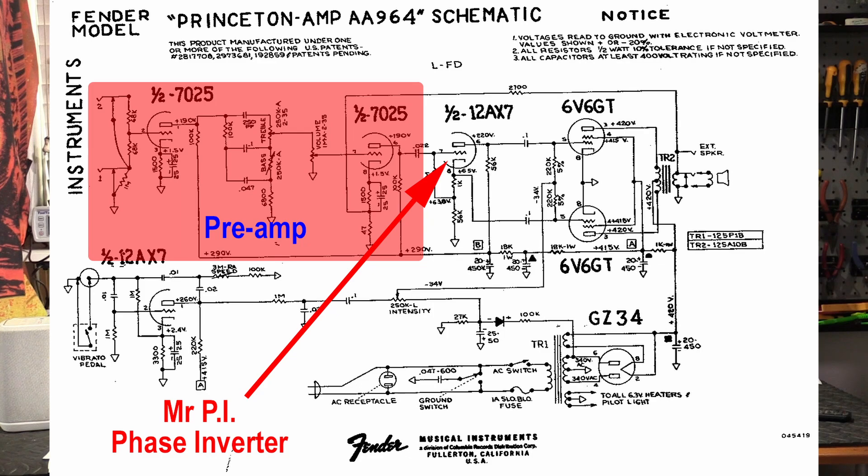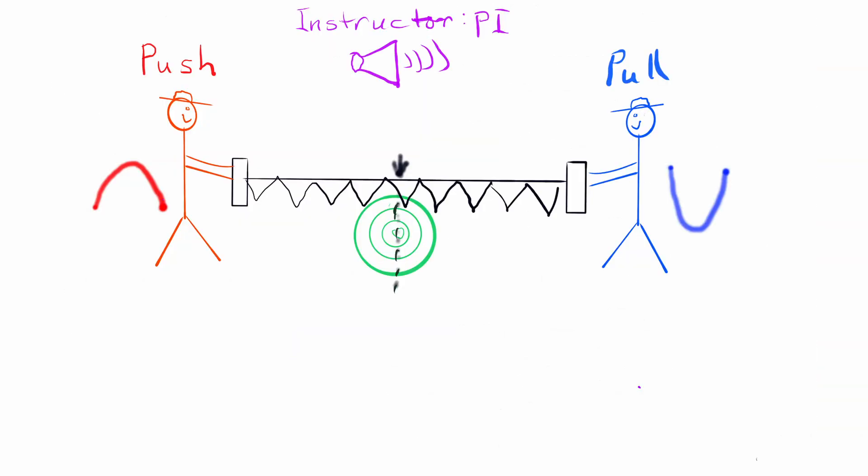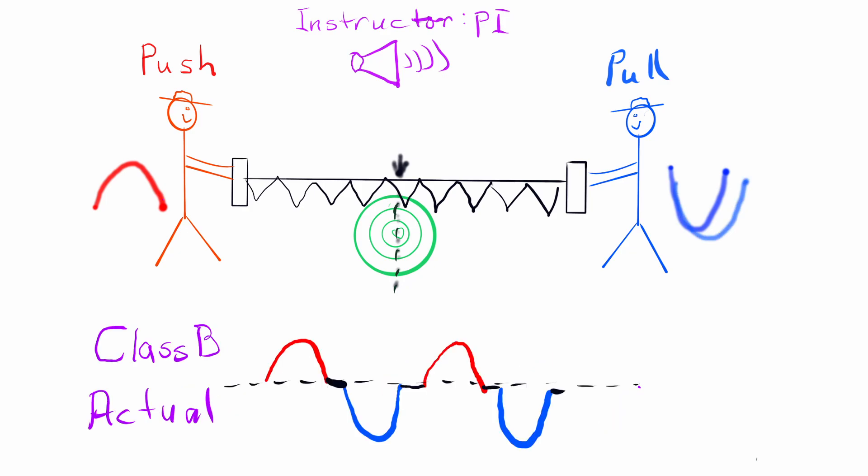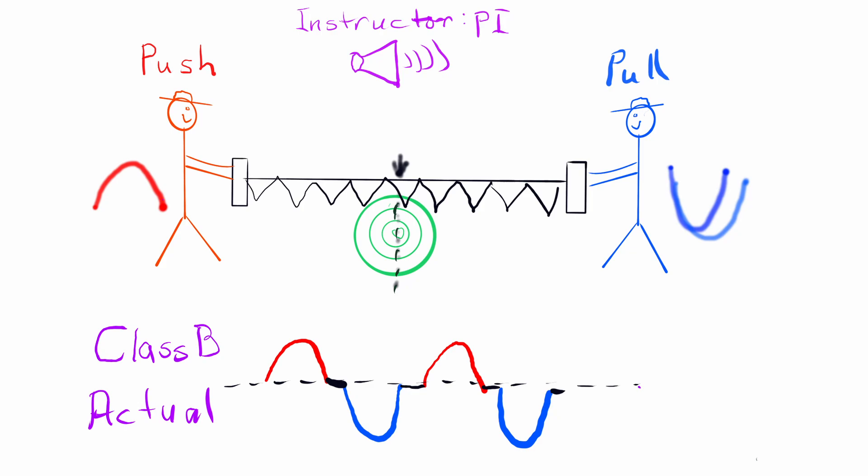My job is to reproduce this signal perfectly. Now the good news for you, Mr. Pull, is that when Mr. Push is doing his work you can have a nice rest. Likewise for you, Mr. Push, when Mr. Pull is doing his work. But wait — you're both resting at the same time! See where those black lines in the graph are? The saw has stopped moving and the amp is no longer amplifying. This is called crossover distortion, and I do not like it.